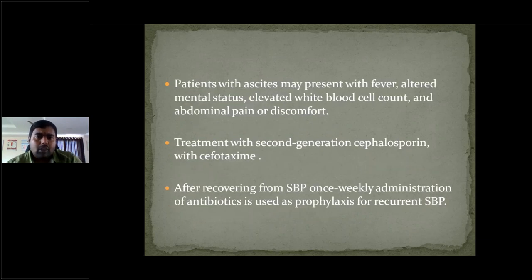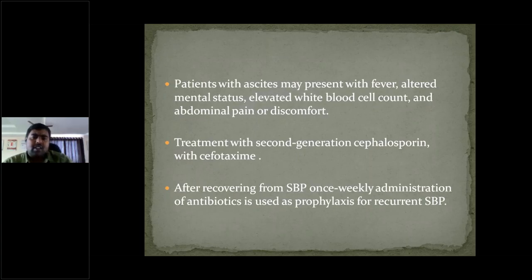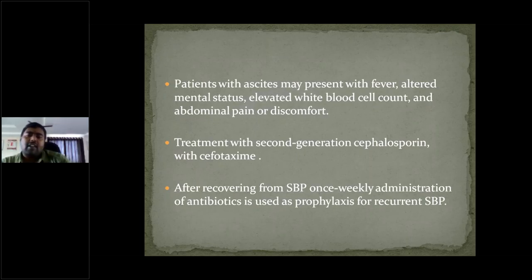Patients with spontaneous bacterial peritonitis have fever, altered mental status, elevated white blood cell count, and abdominal pain. Treatment with second-generation cephalosporins — cefotaxime — is the drug of choice, given at 1 gram twice daily for seven to ten days. After recovery, once-weekly antibiotic administration is given as prophylaxis to prevent recurrent bacterial peritonitis.